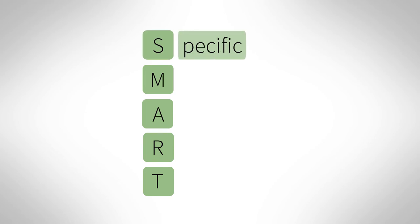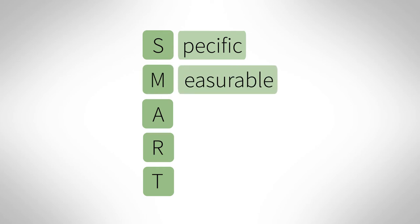Specific: Be specific when writing learning outcomes. They should be written in language that is understandable to students, and clearly state the knowledge, skills and attitudes that students will be able to demonstrate upon successful completion of the course. Measurable: Good learning outcomes can be measured through assessment. They should be written in a way that indicates how the learning will be assessed. This will prepare the students for the assessment and help them feel engaged.